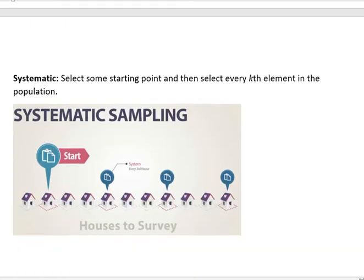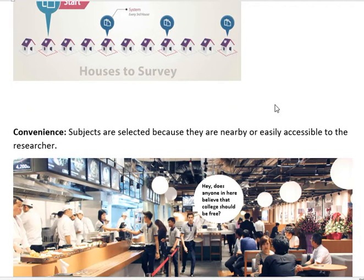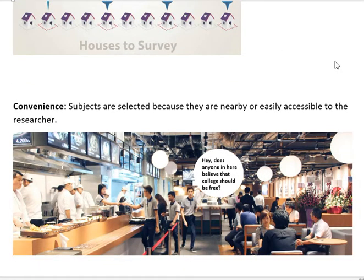Another method is systematic sampling. In systematic sampling you select some starting point and then select every kth element in the population. In this particular picture we're starting with one house and then going to every third house — that's systematic because we just choose a starting point randomly and then survey every third house. Similarly, somebody might go to a phone book and choose a name, then choose every tenth name in the phone book. So it's random, but there's a systematic way of going about it.